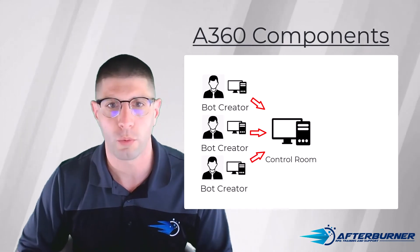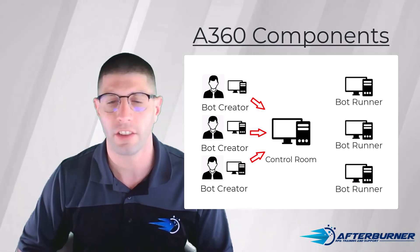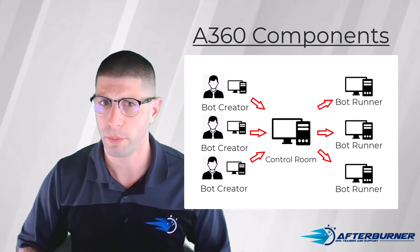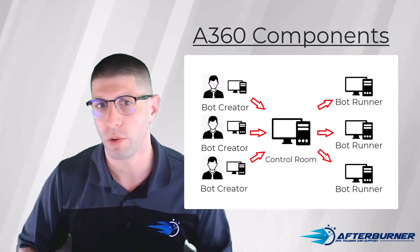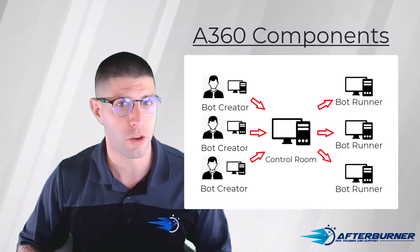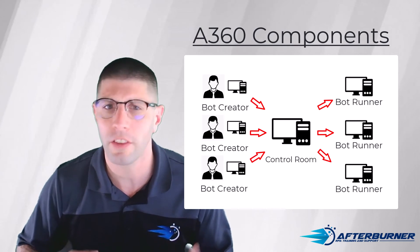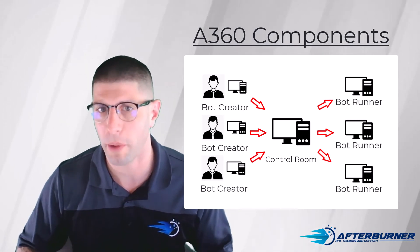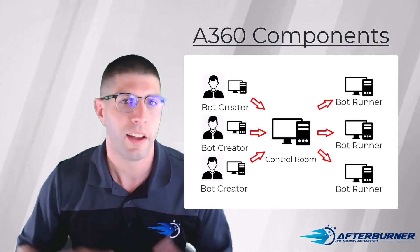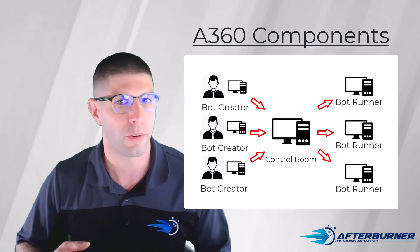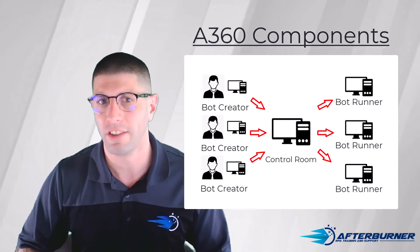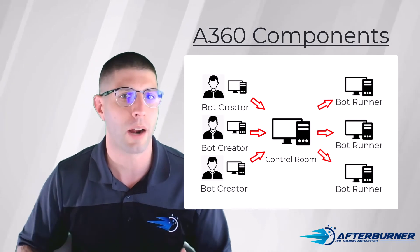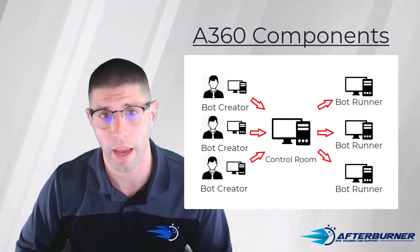When bots are ready to run, they're sent to bot runners to execute their automations. Regardless of your chosen deployment model, the machines where bots run are provided by you or your organization, and can be the same machine as the bot creator as long as that user has a bot runner license. Like with the bot creator, this machine requires the bot agent to be installed so that A360 can properly use its automation tools on that machine.